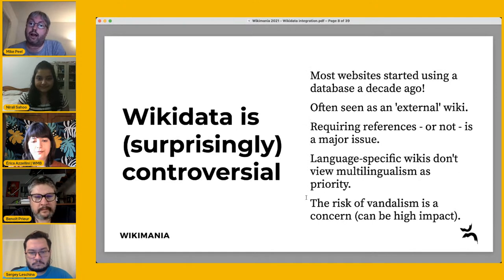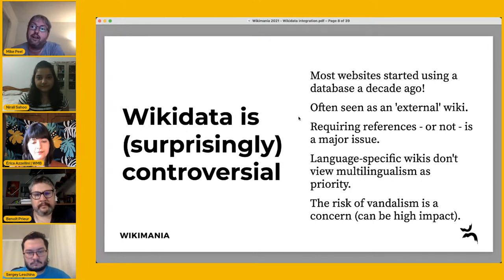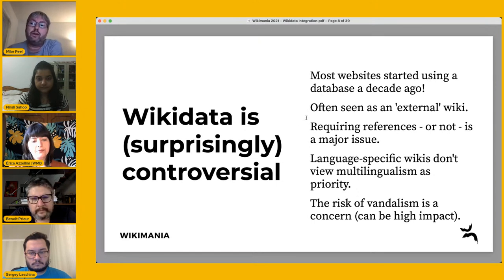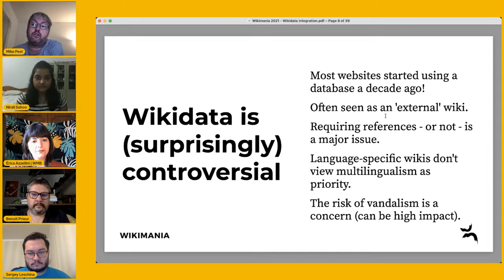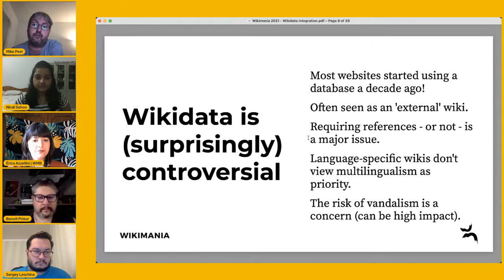Wikidata is surprisingly controversial. Most websites started using a database over a decade ago — I remember coding websites and changing from manually defining pages to using a database and automatically generating pages. We still don't do that in Wikimedia, which is amazing. Wikidata is one way you can do that because you've got a structured database behind your articles. It's often seen as an external wiki though, and people don't like leaving their wiki to go to another one — we're used to this with Commons for images, but doing so with text and data is different.